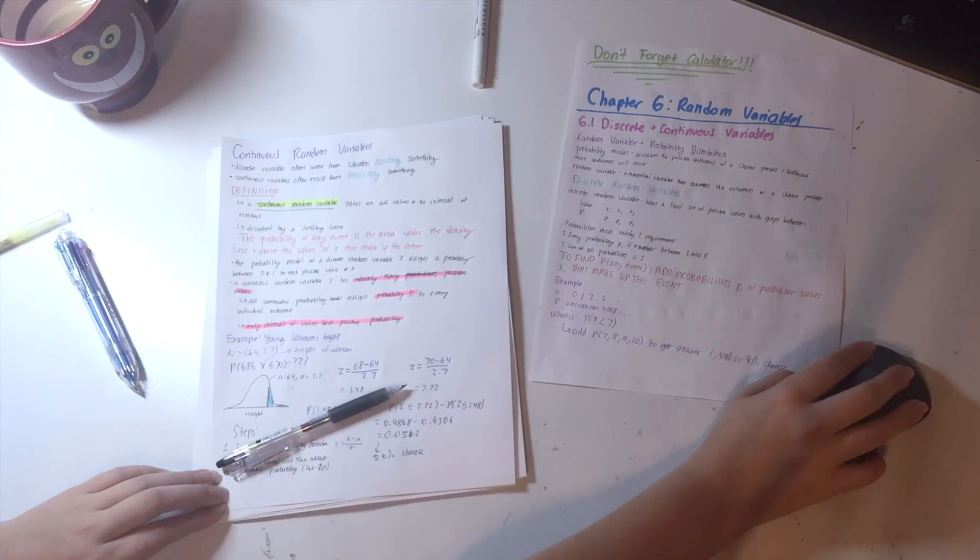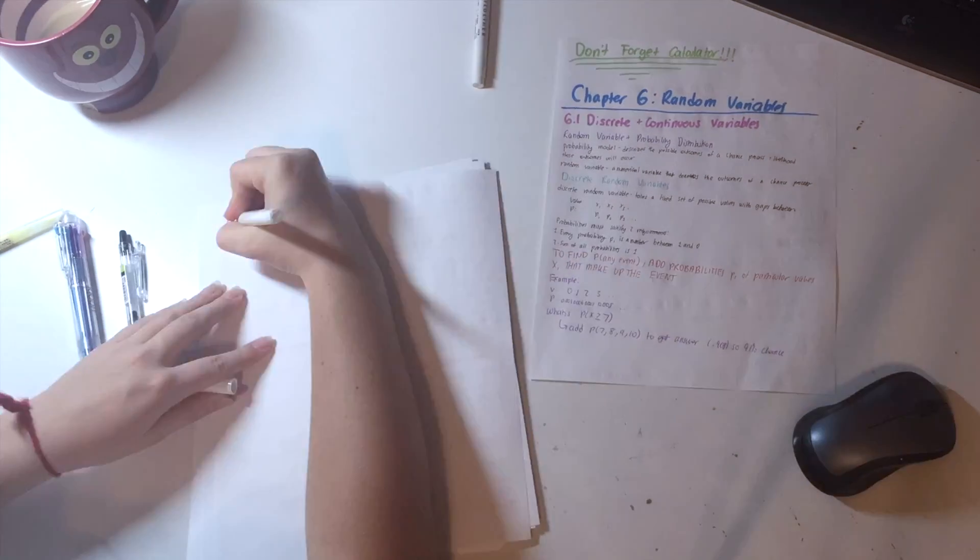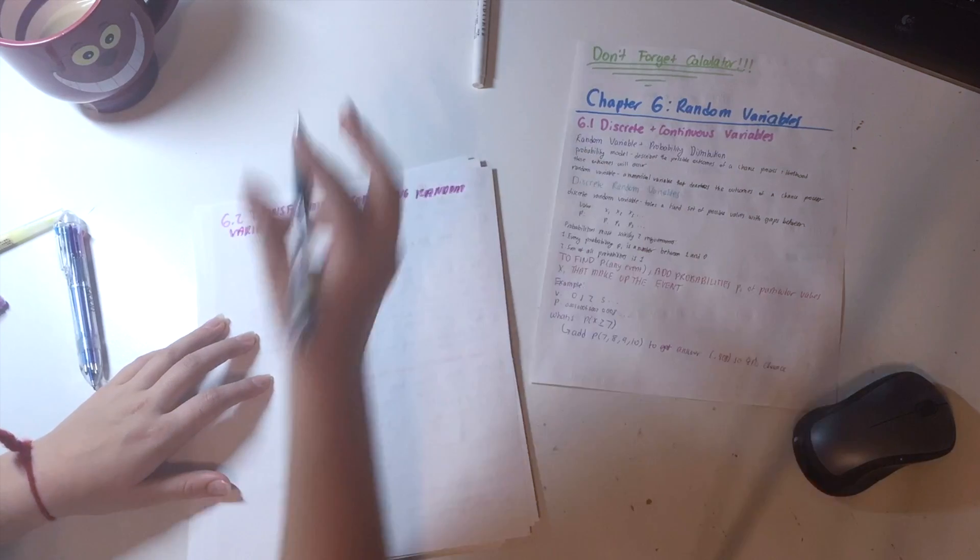And then I start by writing out the different sections. So you can see like 6.1, discrete and continuous variables. And then I have other sections.